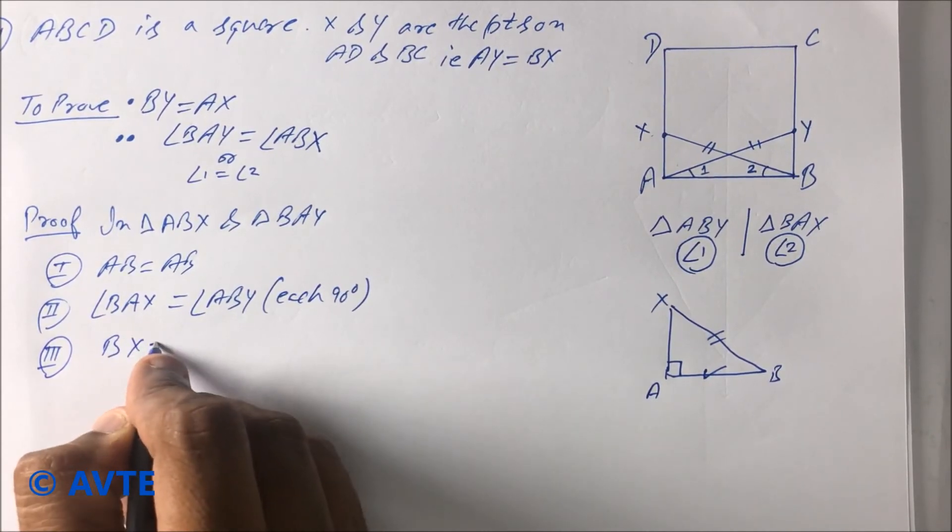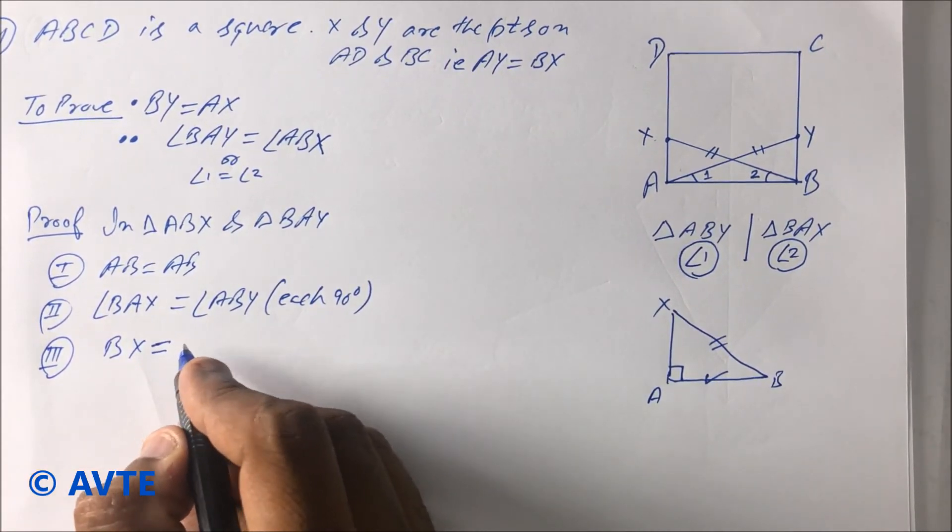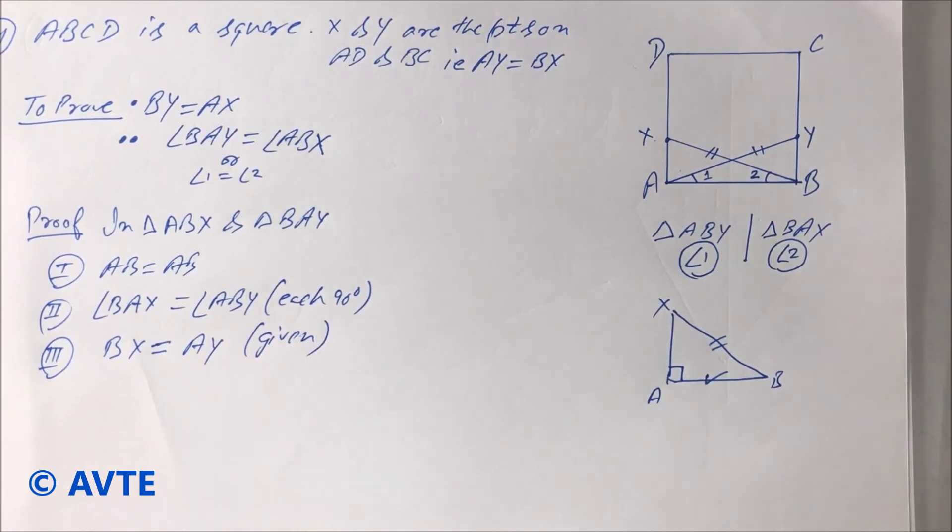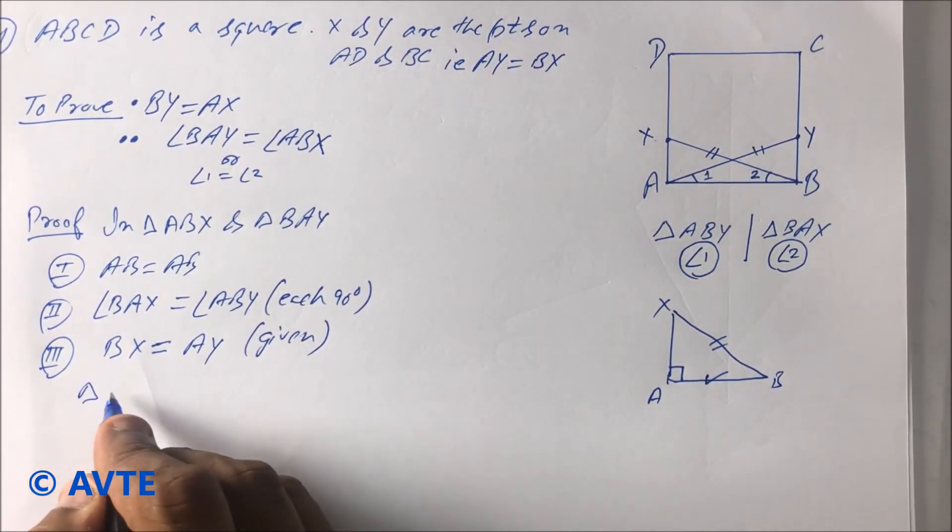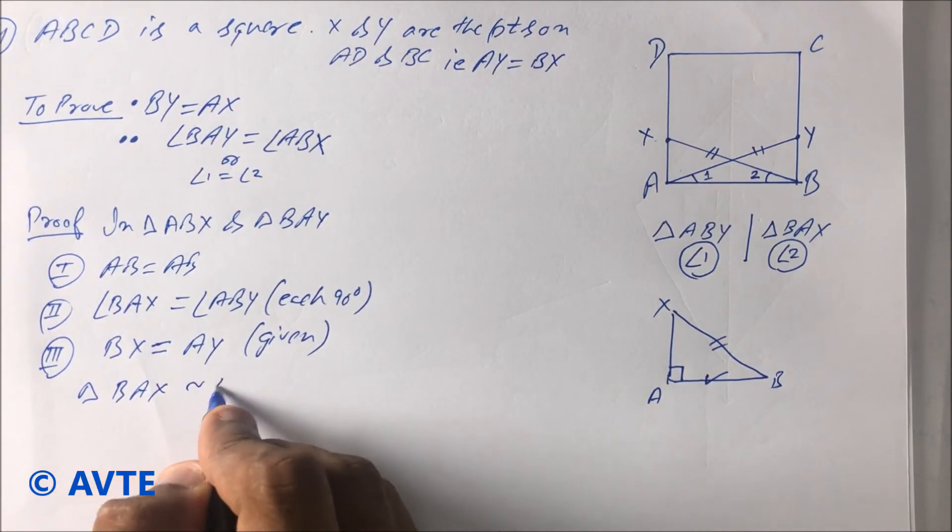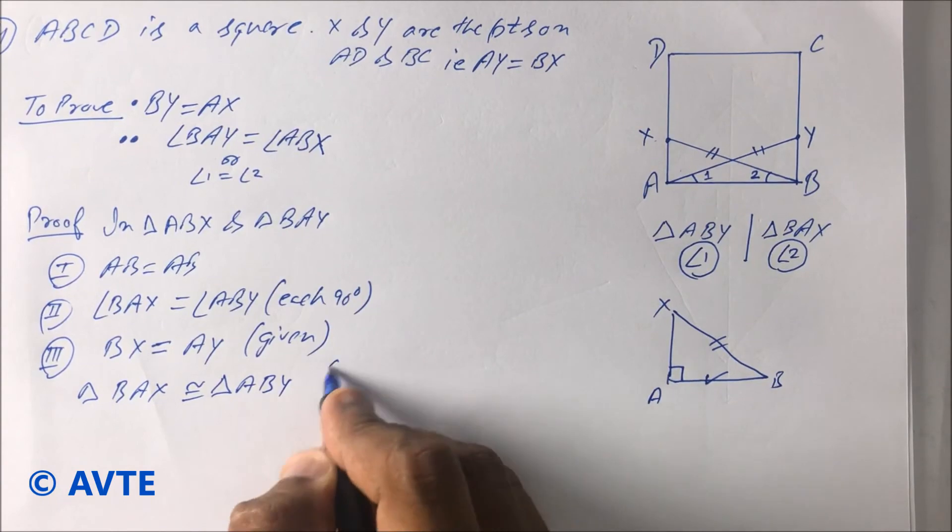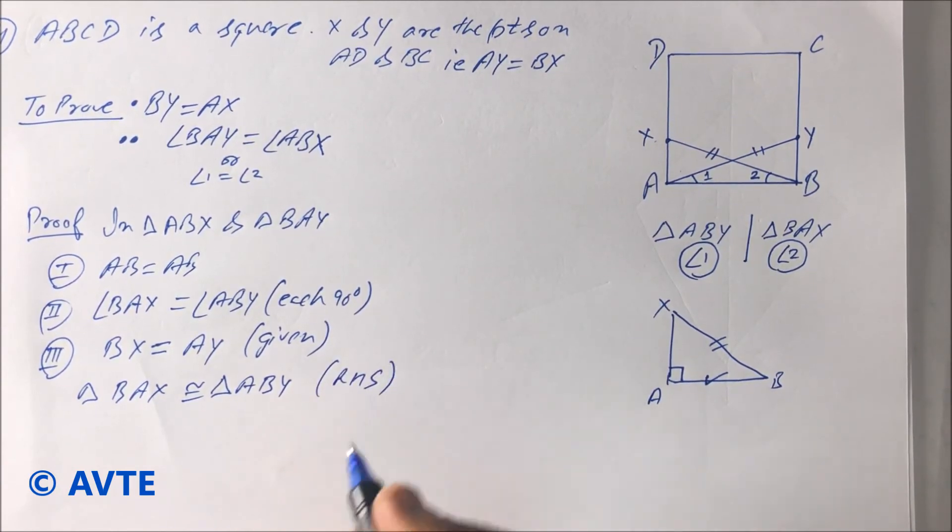So BX is equal to AY, it is given. So triangle BAX is congruent to triangle ABY by which rule? RHS.